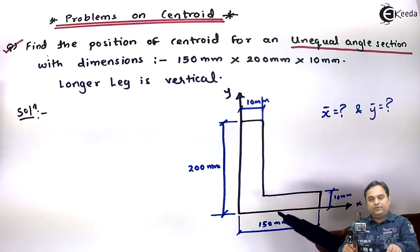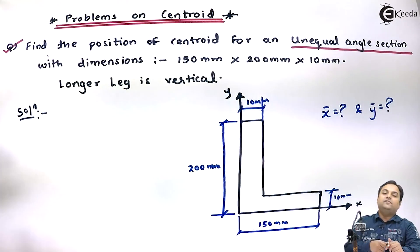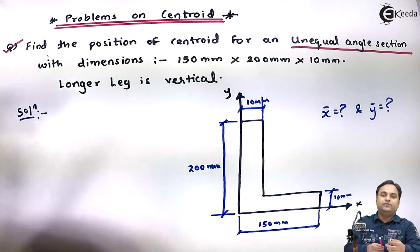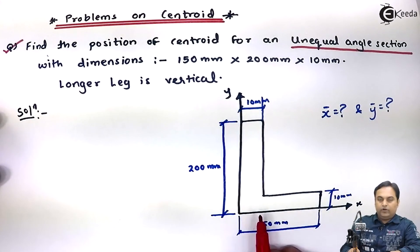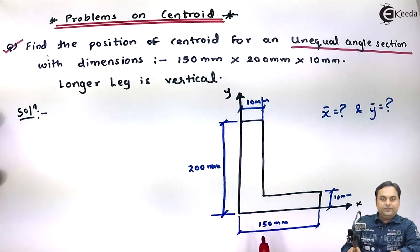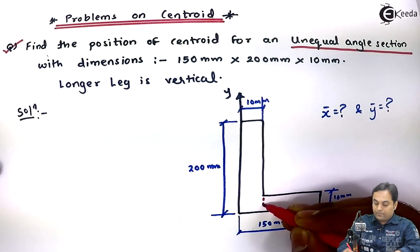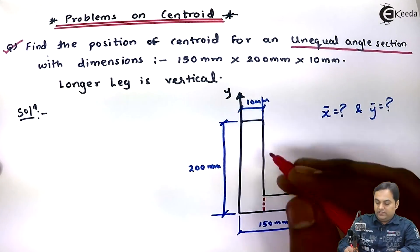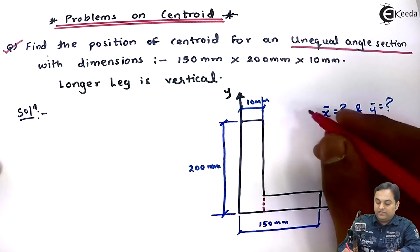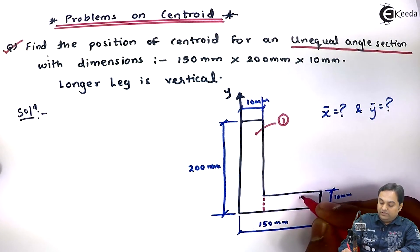Since we are solving the problem on centroid and the figure is an angle section, there is no direct formula to calculate the centroid for an angle section. So, what we can do is divide this unequal angle section into two rectangles. The vertical rectangle I will call rectangle 1, and the second one I will call rectangle 2.